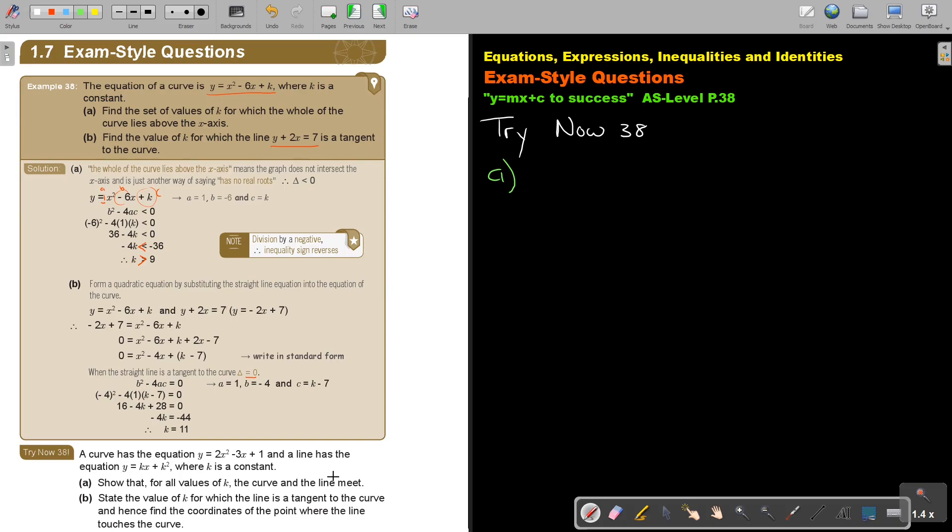That means I'm first going to form my one equation and then I look at the result after I work out the discriminant. So what is my two equations? This is my curve, and this is my straight line. And then I substitute 1 and 2. So I'm getting Kx plus K² equals 2x² minus 3x plus 1.